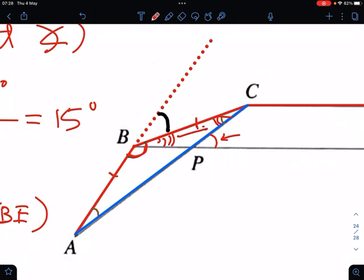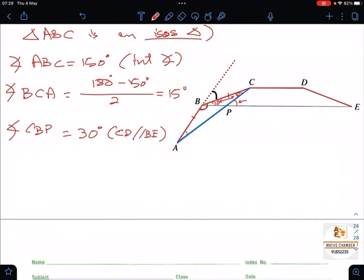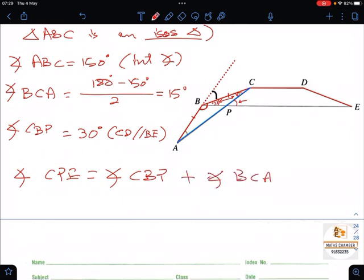Exterior angle of a triangle, right. That means your angle CPE will be equal to angle CBP plus angle BCA. That will give you 30 degrees plus 15 degrees, which gives you 45 degrees. Reason, of course, exterior angle of triangle. Simple.